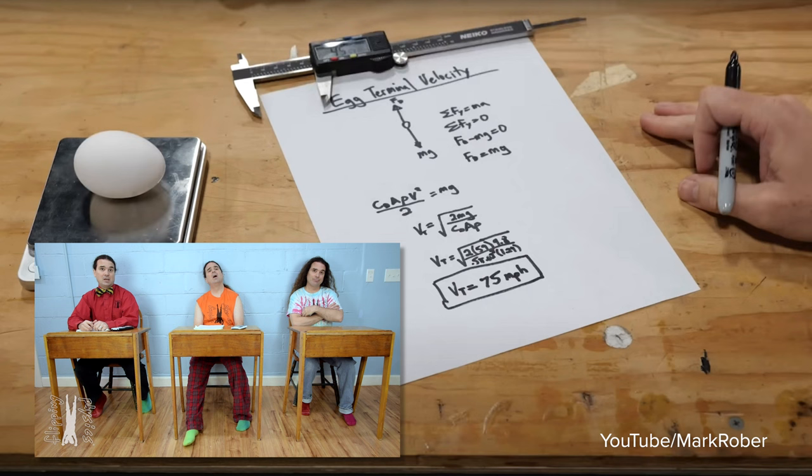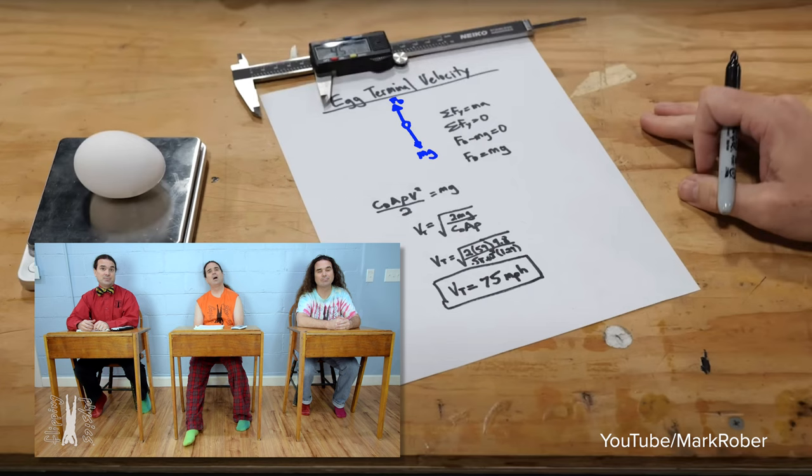Mark, you drew the free body diagram, summed the forces, identified the direction you were summing the forces in, identified the net force in the y direction equals zero, solved for the drag force, substituted in an equation for the drag force, and solved the equation for the terminal velocity. So yeah, Mark, you did show a lot of work. Yes, Billy, thank you for pointing all of that out.